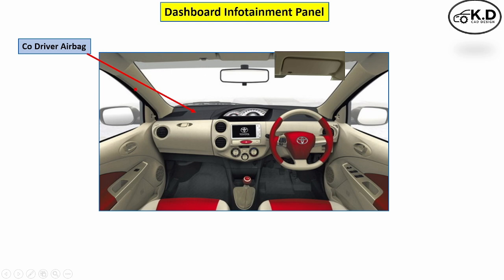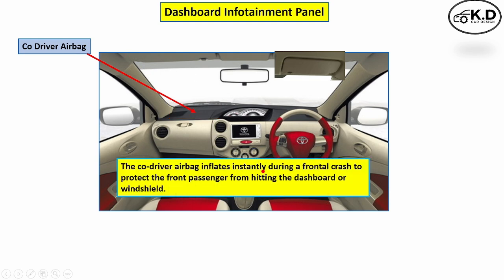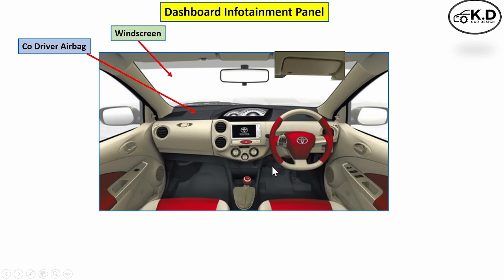Starting from the dashboard and instrument panel, the first part is the co-driver airbag. The function of the co-driver airbag is to instantly open during a crash and protect the front passenger from hitting the dashboard and the windshield. The next part is the windshield.